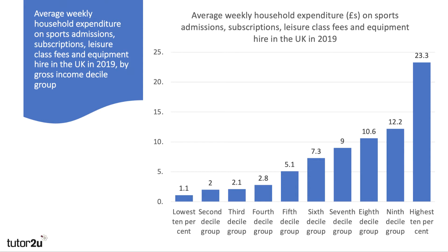Likewise, plotting it slightly differently — going from poorest to richest in terms of spending on sports admissions, ticket prices, subscriptions, leisure class fees, and sports equipment — there's a substantial jump. Almost double the spend per week once you get into the richest 10% of the population.